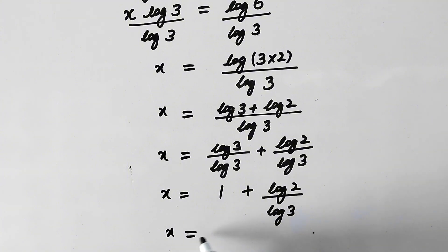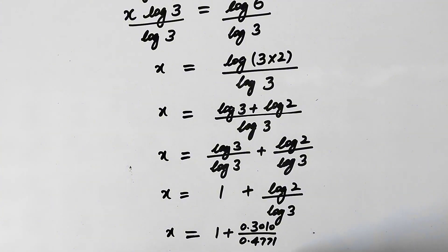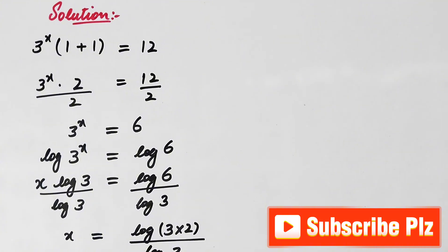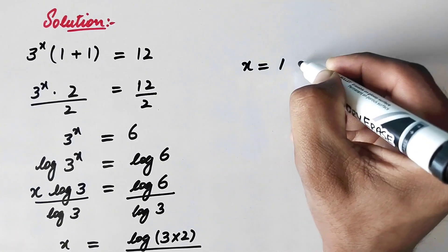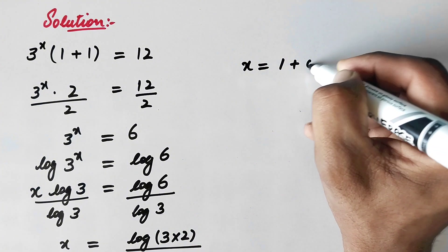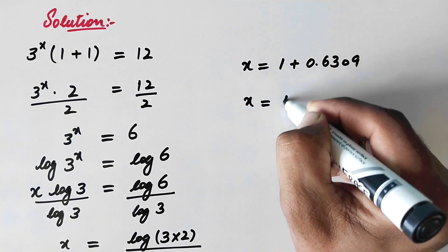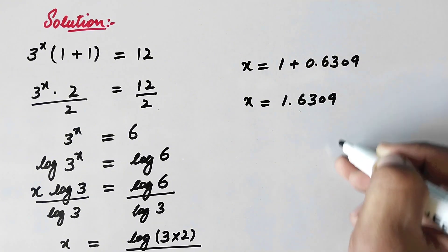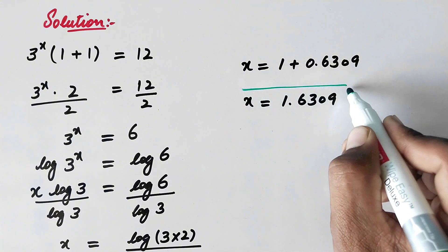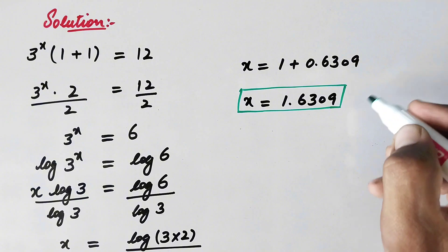And in the next step we will put the values of these log terms. So here the value of log of 2 is 0.3010 divided by log of 3 which is 0.4771. That equals x equals 1 plus 0.6309. So here x equals 1.6309, and that is the value of x, our final answer.